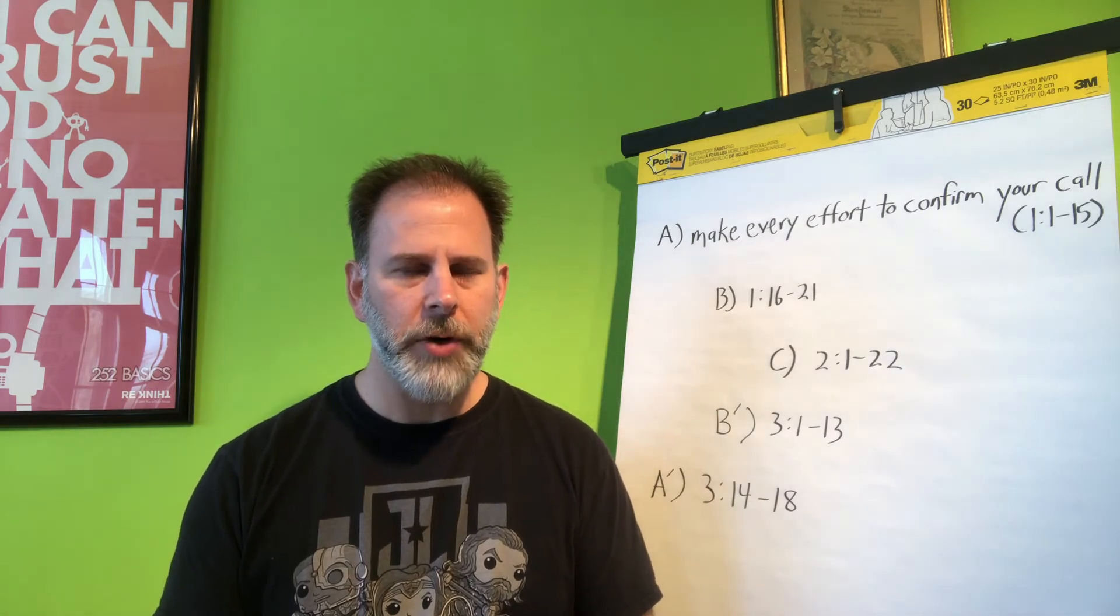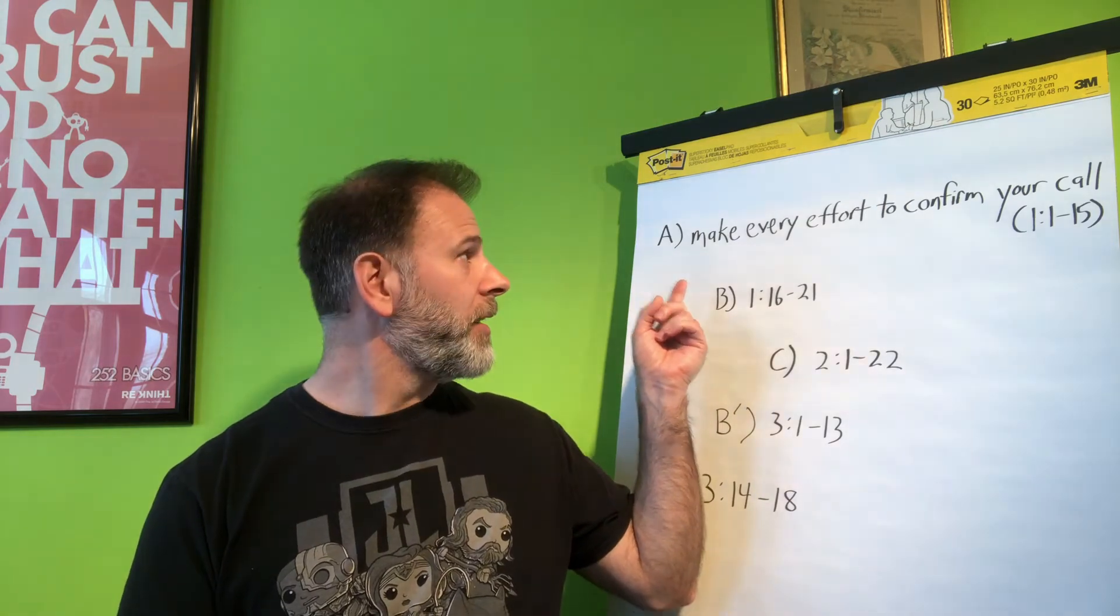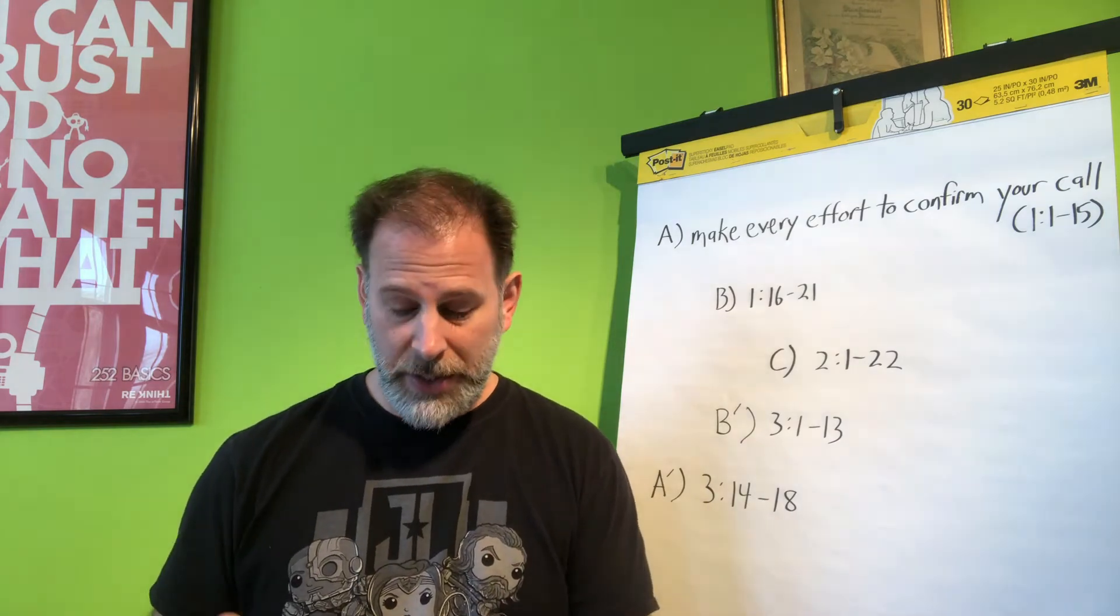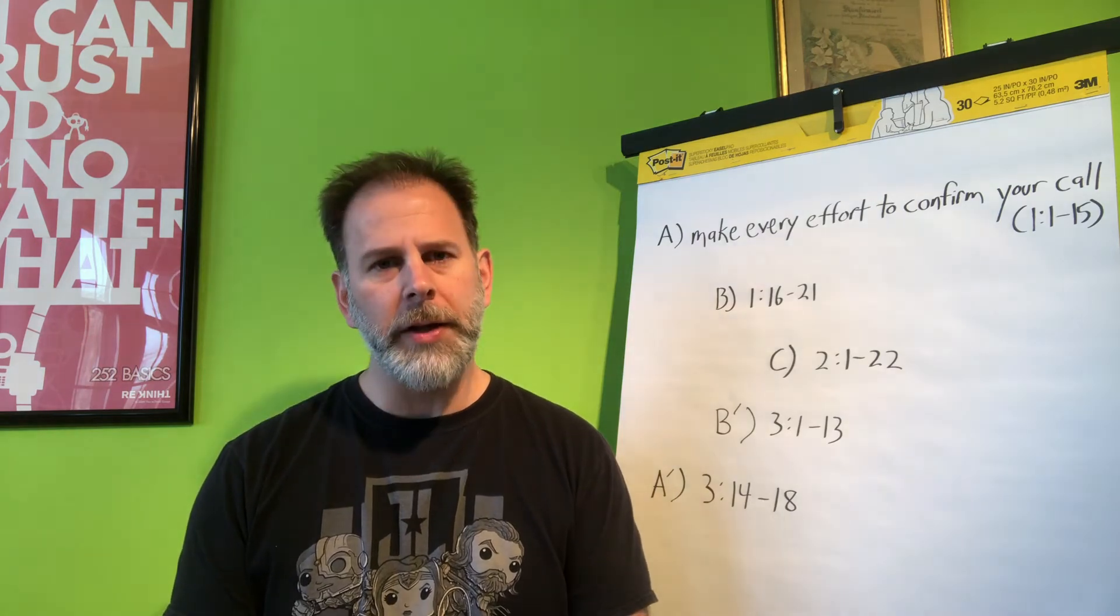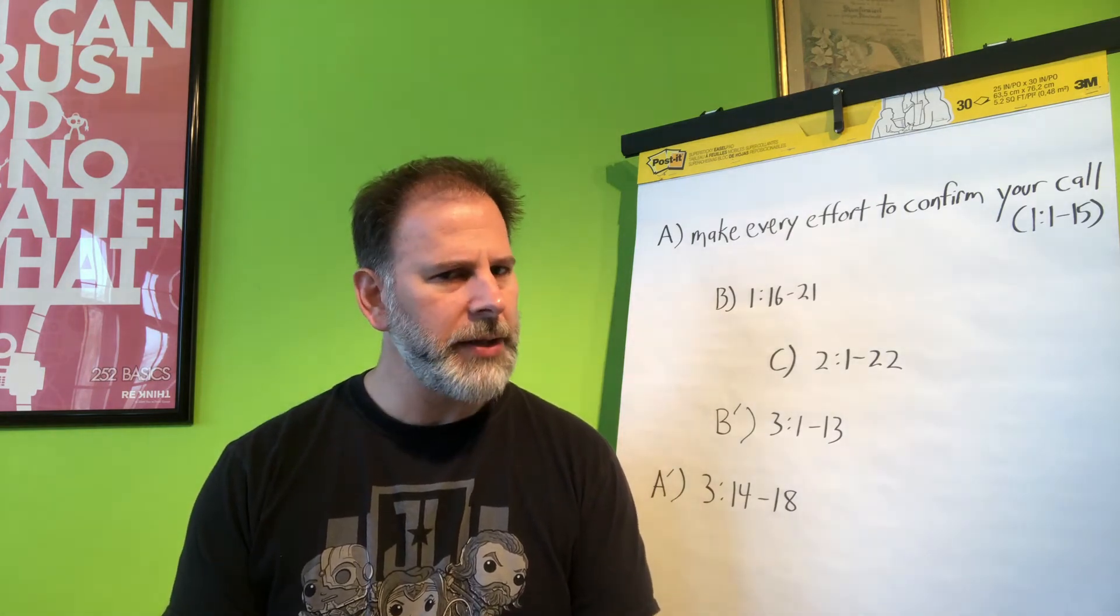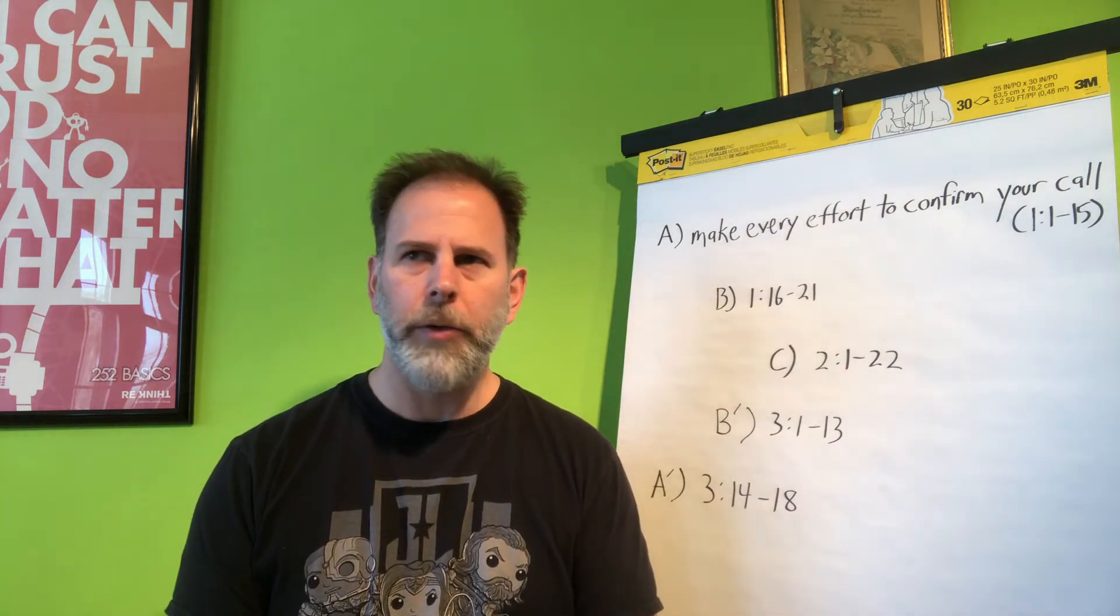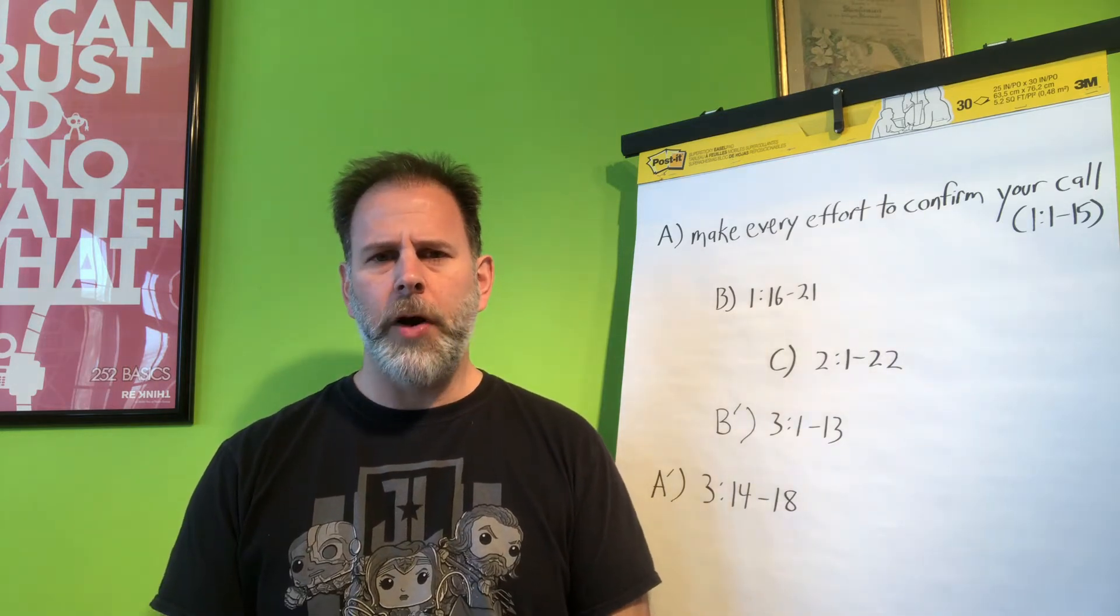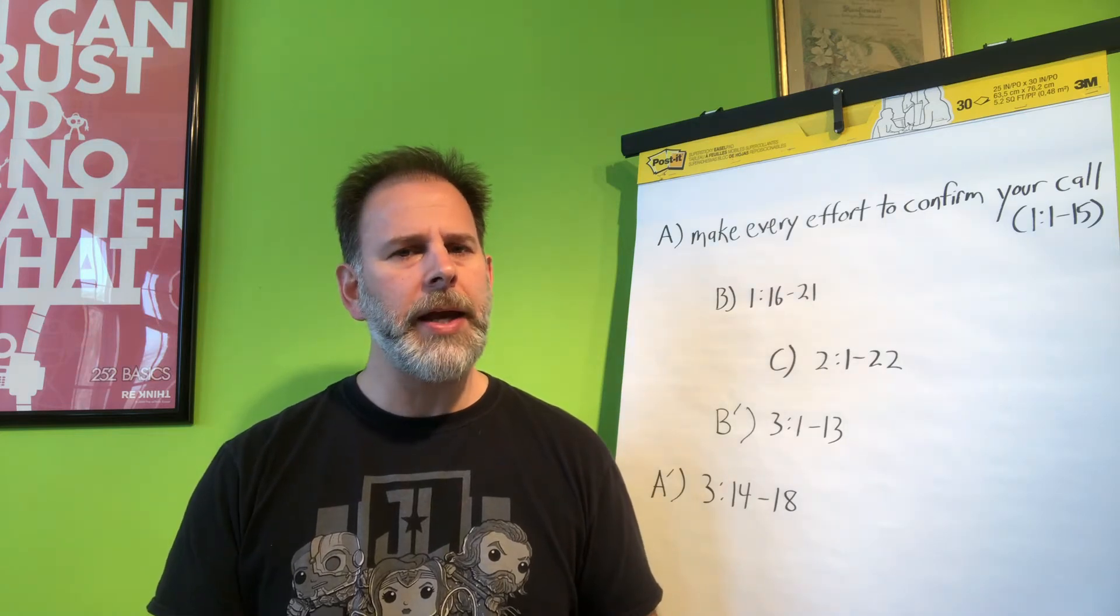Now, interestingly, when we first looked at the chiasm for the structure of 2 Peter, we call that first thematic section A, make every effort to confirm your call or your calling. And this is specifically where that comes from here in verse 10. The idea of a calling is definitely implied that it's divine. It comes from God. And the idea of election, although we've imported a whole bunch of theology over the centuries into what that word election means, it really just technically means choosing.